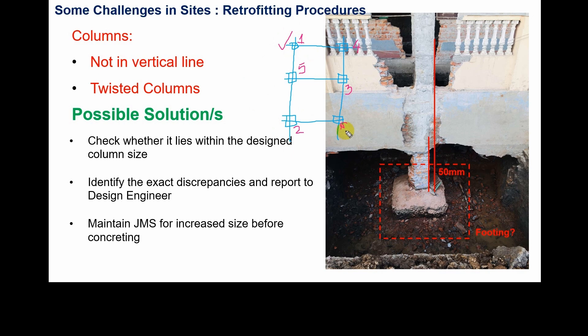Nepal is a seismically active country and highly vulnerable in terms of seismic activity. Suppose an earthquake happens during construction works, and all the footings and columns are exposed together for the retrofitting works — if shaking occurs at that time, the chances of collapse of the structure are very high, which may cause loss of property and loss of workers' lives. So proper safety should be ensured by retrofitting columns in an alternating basis, whether there are 15 or 10 columns.